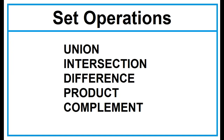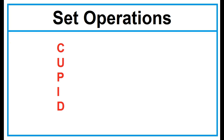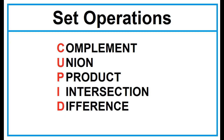Set Operations. Remember CUPID in Set Operations. C stands for Complement, U for Union, P for Product, I for Intersection, D for Difference.